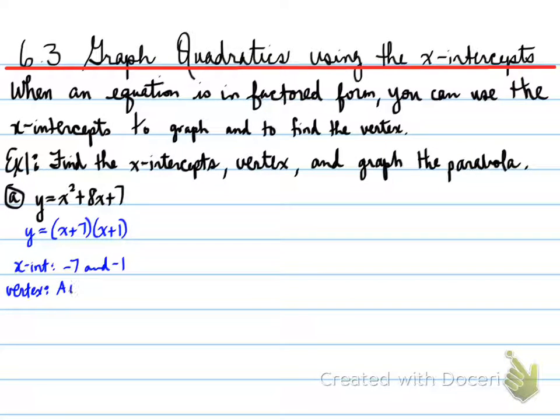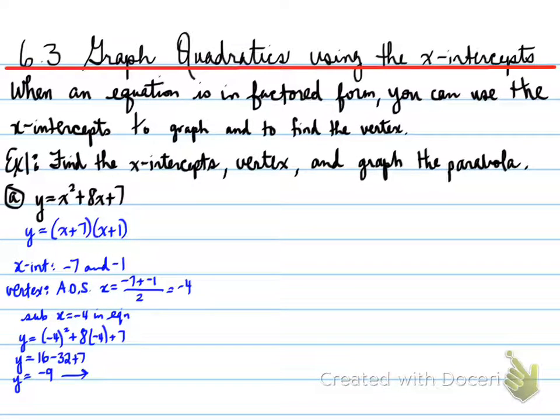Our vertex, you will find by taking the axis of symmetry, by adding up the x's and dividing by 2, which gives us negative 4. We sub in the x equals negative 4 into the equation, and we get our y value of negative 9. What does that mean? Our vertex is going to be negative 4, negative 9.